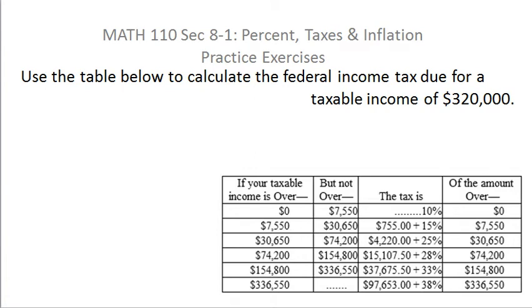Use the table below to calculate the federal income tax due for a taxable income of $320,000. Now here it's just strictly a matter of learning how to read the table and then doing a little bit of arithmetic.